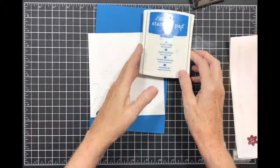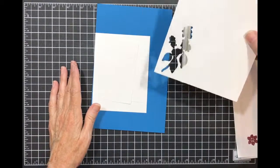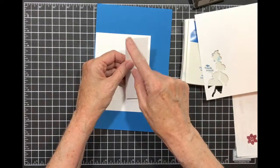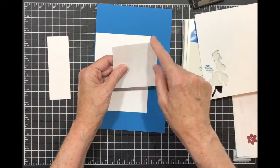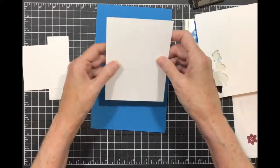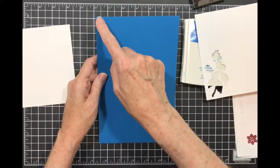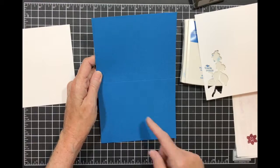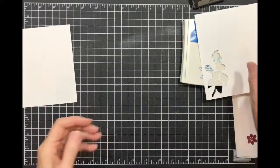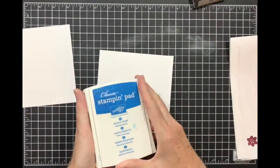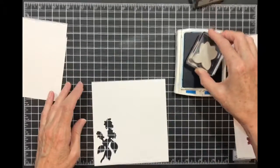My ink is Pacific Point. I have a scrap of whisper white, a piece that's one and a half by four and a fourth, and a piece that's three by three. I have a piece for the inside that's four by five and a half. My card base is Pacific Point and it is five and a half by eight and a half scored at four and a fourth, and I have my envelope.